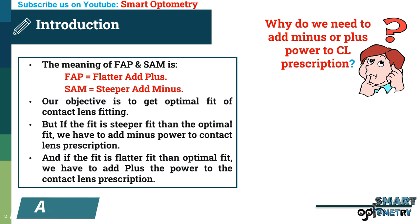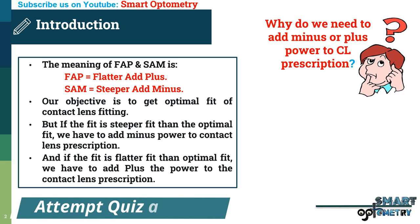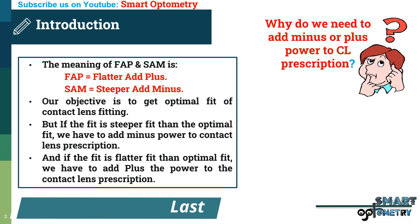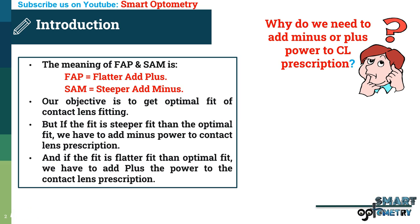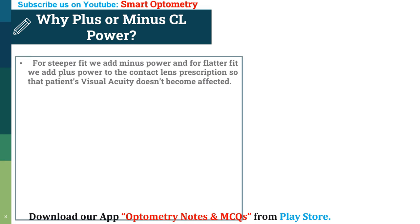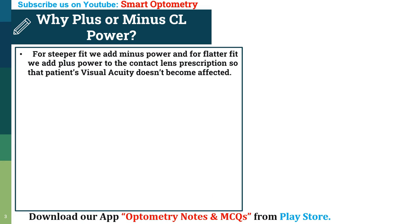You might be thinking: why do we need to add minus or plus power to the contact lens prescription if the fit is steeper or flatter? For steeper fit we add minus power, and for flatter fit we add plus power to the contact lens prescription, so that the patient's visual acuity doesn't become affected.